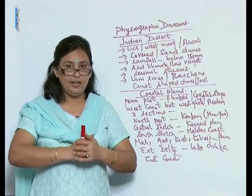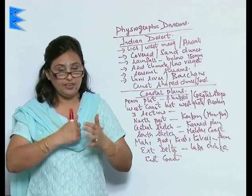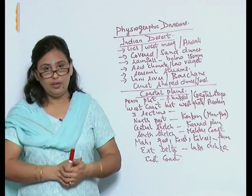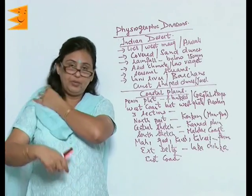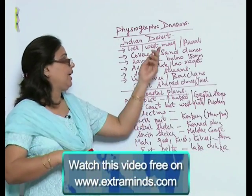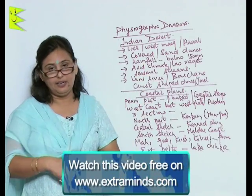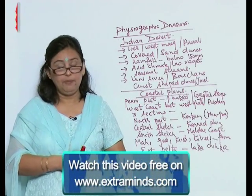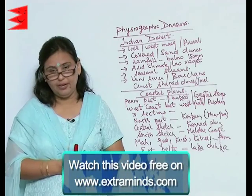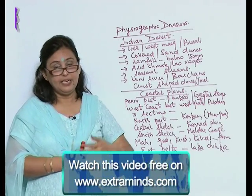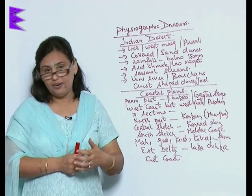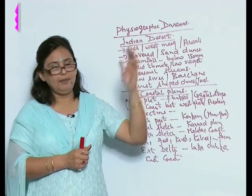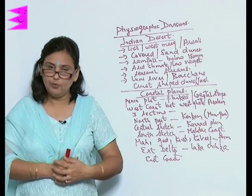We have the northern plain which has rich soil, lots of water, and is fit for agriculture, and in the same country we have a desert which has minimum rainfall and cannot boast of any big river. However, that is our country India, which has all types of physiographic divisions.